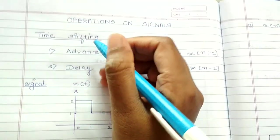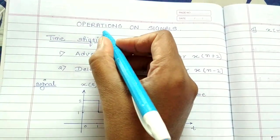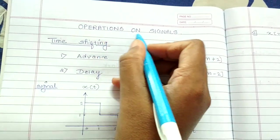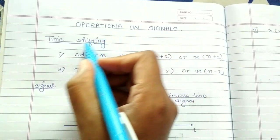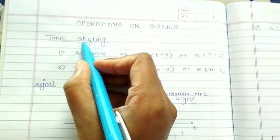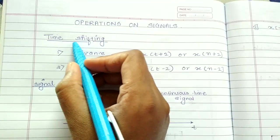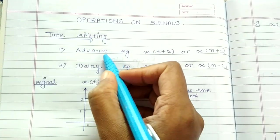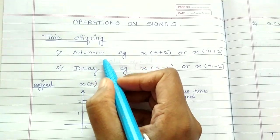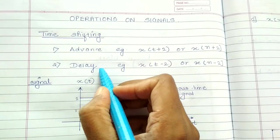In today's video, we will be studying about operations on signals — operations like time shifting. Now time shifting is of two types: advance and delay.